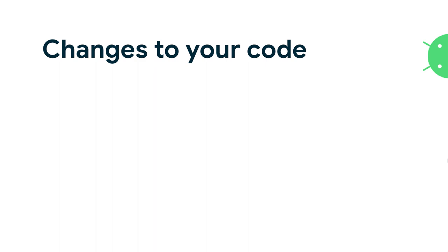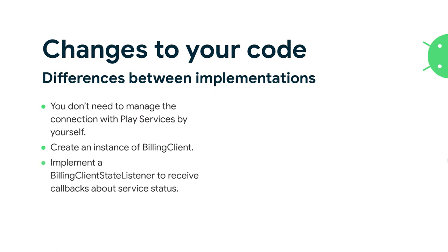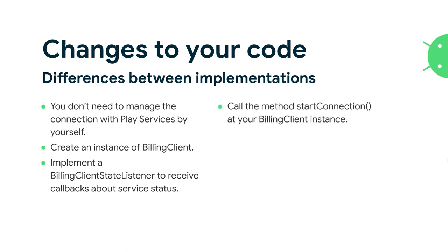When migrating from AIDL to Play Billing Library 2, you don't need to manage connection with Play services by yourself anymore. Create an instance of billing client, implement the BillingClientStateListener to receive callbacks about service status. You just need to know what is happening — connected or disconnected. You don't need to retry by yourself; if the connection is lost, the service will redo the connection by itself. Then call startConnection on the billing client instance — no need to create a service bind or check for an intent.